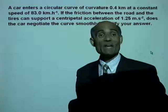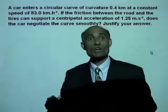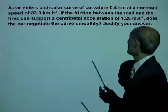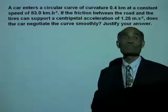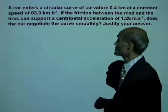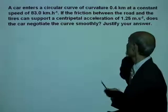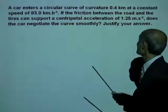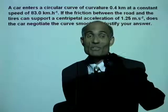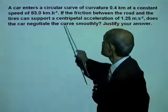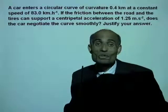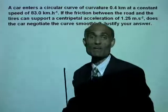A car enters a circular curve with a radius of curvature of 0.4 km at a constant speed of 83 km per hour. The friction between the road and the tires can support a centripetal acceleration of 1.25 m per second squared — that is the safest acceleration the car can have. If the speed increases above this, the car will not be able to keep on that circular track.